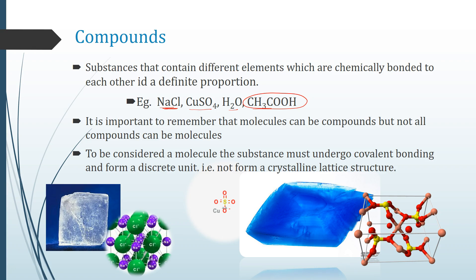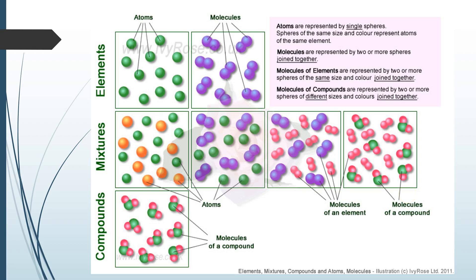Things like sodium chloride, because it forms lattice structures, and same with copper sulfate, they're ionic solids so they don't form molecules. They form these really big continuous arrays rather than molecules, so they're compounds but they're not molecules. To be considered a molecule, the substance has to be covalently bonded. If they're ionic or form a crystalline structure, then we're not going to consider them discrete molecules.